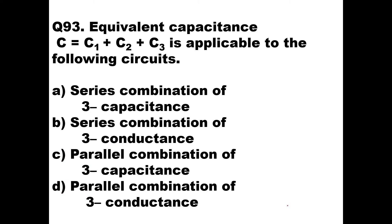Then we will go to the next question. The equivalent capacitance C = C1 + C2 + C3 is applicable to the following circuit. A parallel combination of three capacitances will give C = C1 + C2 + C3. So option C, parallel combination of three capacitances, will be the right answer here.